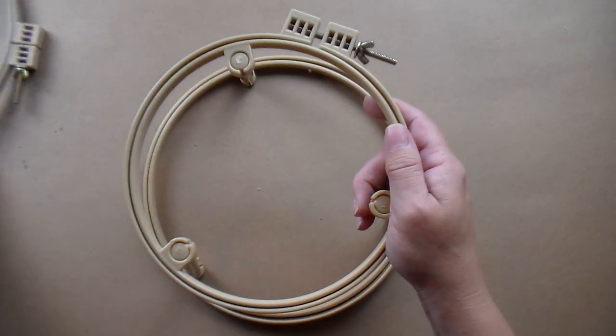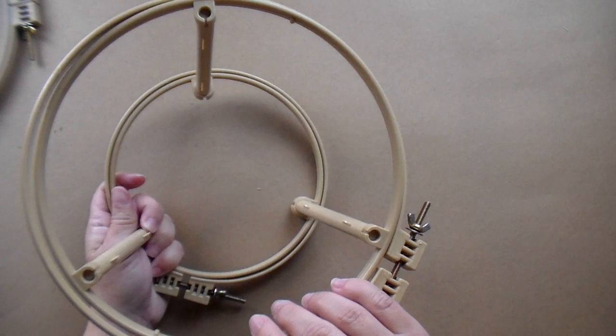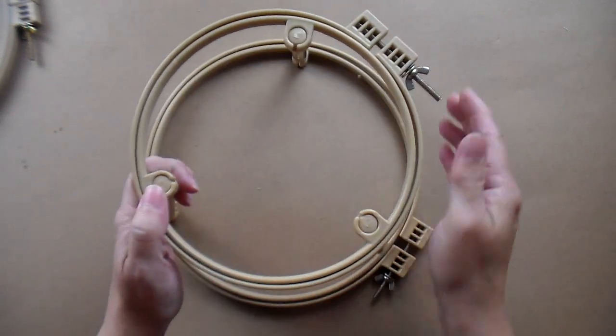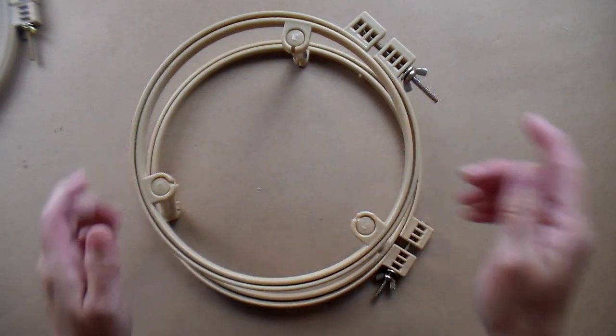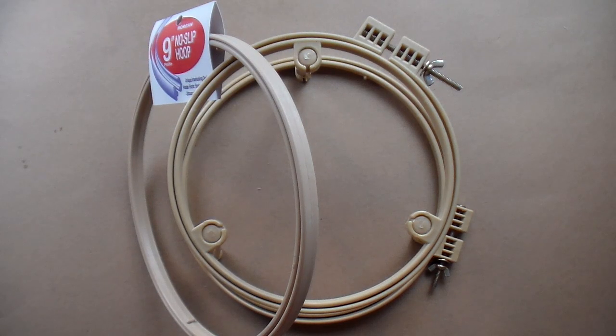The lap stand is more expensive than the single frame but it does have two different sizes of hoops and it allows you to set the project down in your lap or on a table while you're punching, leaving both hands free for punching. With both of these options the fabric may slip some as you punch and may need to be retightened occasionally.